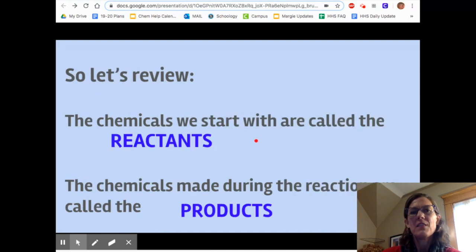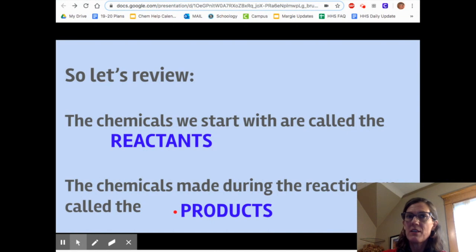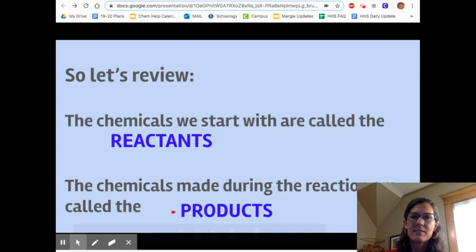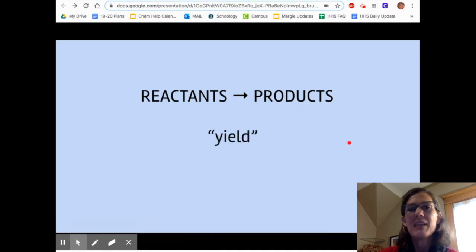Let's review that vocabulary. The chemicals we start with are called the reactants. You should say that after me, reactant, reactant. And the chemicals made during the reaction are called the products. That word you probably heard, product, product. So reactants yield products. The word we use for that arrow is yield. So say that with me. Reactants yield products. The word yield could be thought of as like the word make or create.